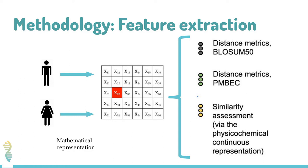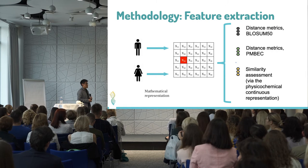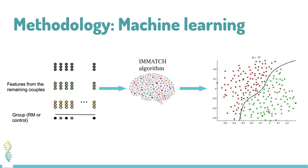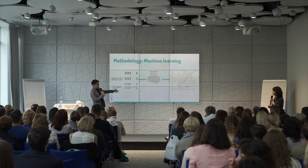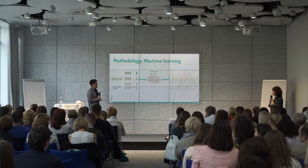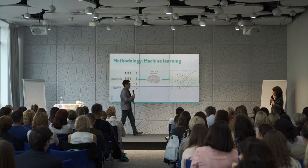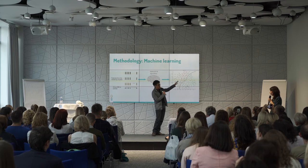The mathematical representation includes information from evolutionary distances and physical-chemical information of the alleles. Using this set of information — and of course knowing to which group every couple belongs — we developed an artificial intelligence algorithm, which allowed us to create a frontier between the two different groups.